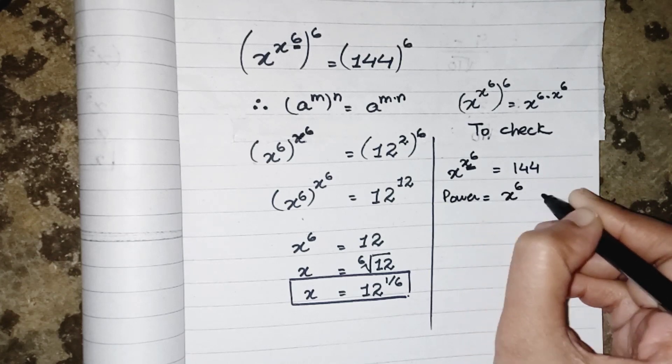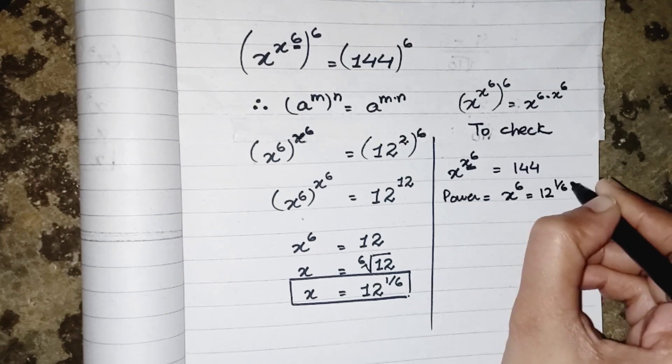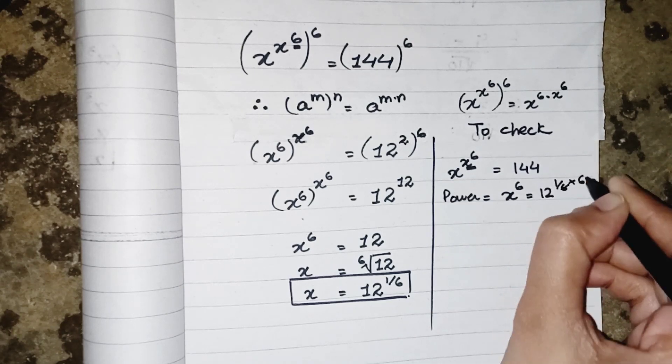6 and 6 both are cancelled, so we can say that our power will be equals to 12, where my base will be